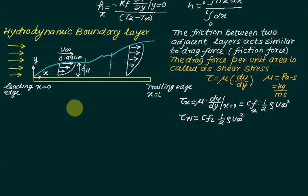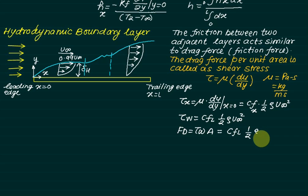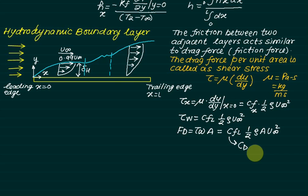The average shear stress over the plate is given by τ_wall = C_fL × (1/2) × ρ × U∞². Multiplying the shear stress over the plate by the area of the plate gives the drag force. The drag force is therefore: F_drag = C_fL × (1/2) × ρ × A × U∞². This average value C_fL is also known as the drag coefficient, denoted C_d.